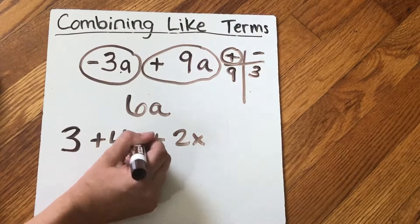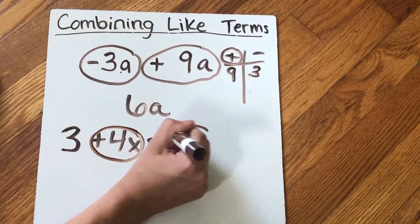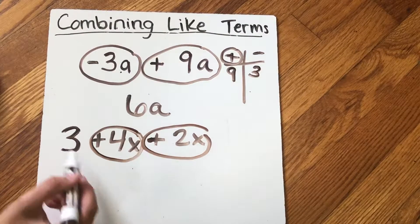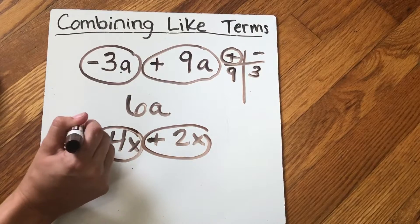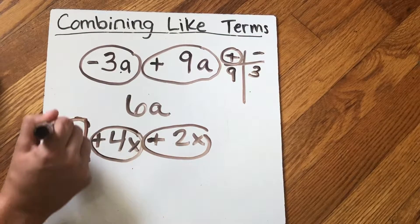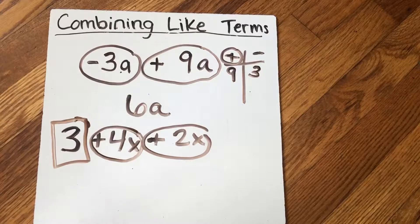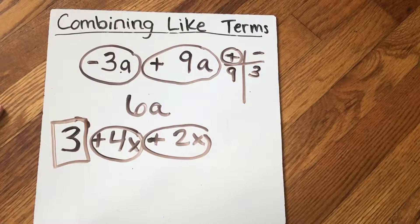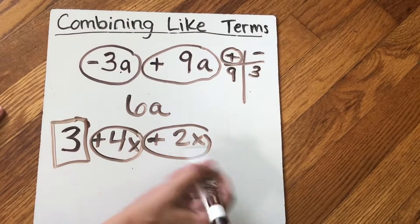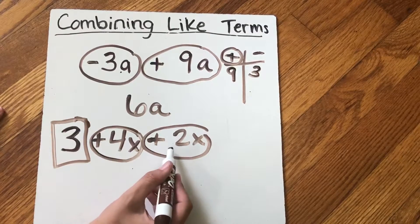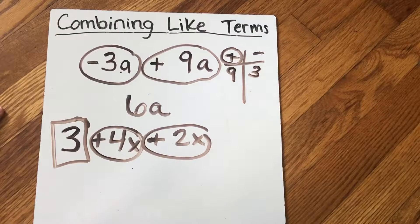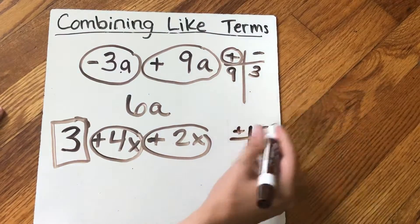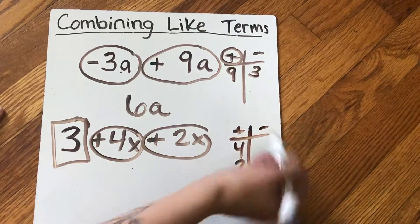Well, the x's are alike. So I'm going to circle them. This one's not alike because it doesn't have that x. It's just a whole number. So this is on its own thing. So I'm going to box this one. Remember, I like to do different things for the different teams there are, so I know what I'm combining and what I'm not combining. Alright, so let's combine these. I have positive 4 and a positive 2. I know 4 + 2 is 6.